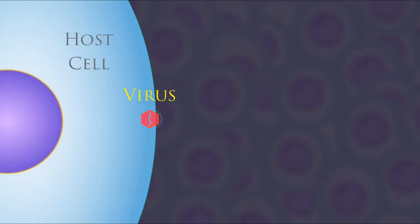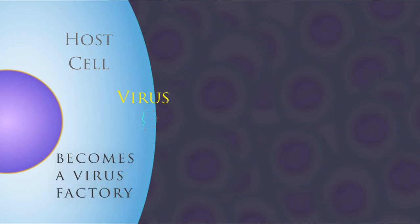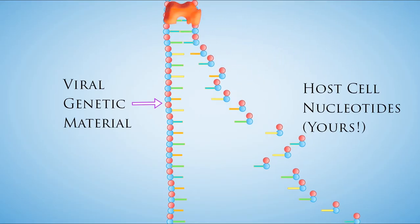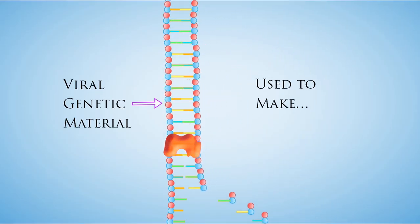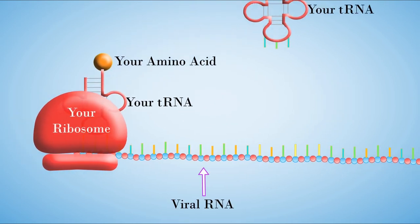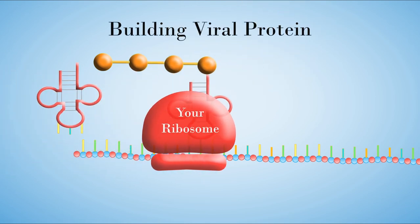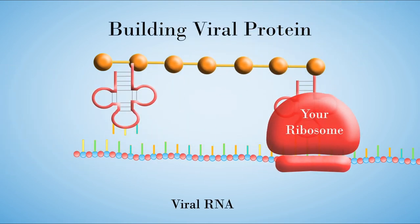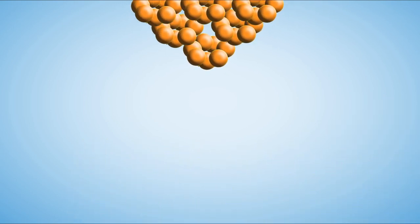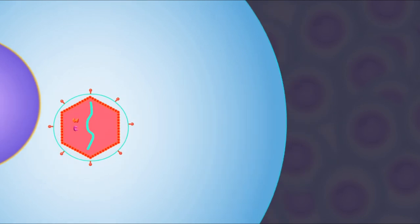Viruses hijack your cells and turn them into virus factories. They do this by inserting their genetic material and viral enzymes into your cell. Once inside, your cell is tricked into following the instructions of the viral DNA or RNA to make more viral DNA or RNA and viral proteins. So the virus uses your cell machinery to reproduce itself and pump out more viruses that can then spread by infecting other cells.